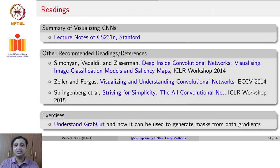The recommended readings for this lecture are once again, the lecture notes of CS231N on Visualizing CNNs, as well as three papers: Deep Inside Convolutional Networks, Visualizing and Understanding Convolutional Networks in ECCV, and Striving for Simplicity, the All Convolution Net, which was the paper that introduced guided backpropagation. And one exercise, use this link, hyperlink here to understand graph cut, and how it can be used to generate masks using data gradients.